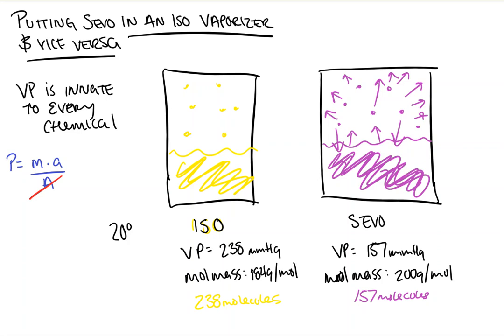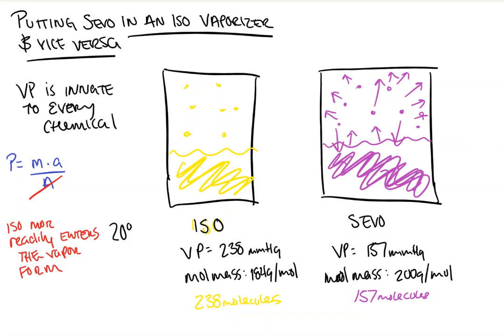What this means, at least to me, is that isoflurane more readily enters the vapor form compared to sevoflurane. This means that the sevoflurane vaporizer is designed to try and liberate more molecules at the same room temperature, because it's harder to turn sevoflurane from a liquid into a vapor.